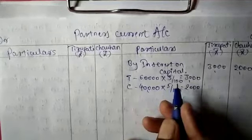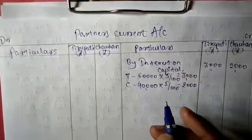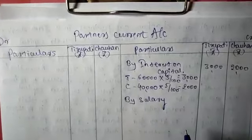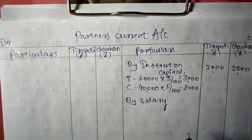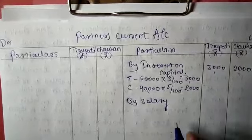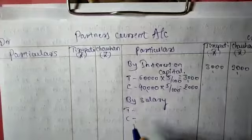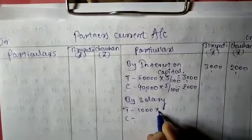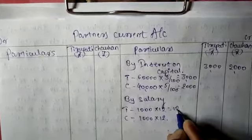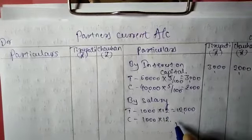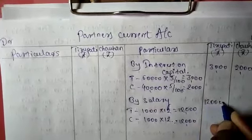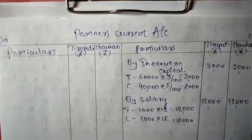The next adjustment is salary. The per month salary is ₹1,000 for both partners. For Tirupati: ₹1,000 per month for 12 months equals ₹12,000. For Chauhan: also ₹1,000 per month for 12 months equals ₹12,000. So the yearly salary entry is ₹12,000 each, not the per month figure.